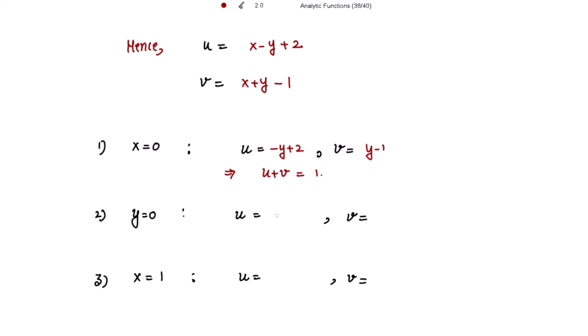For y = 0, we get u = x + 2 and v = x - 1. Solving these two gives u - v = 3. For x = 1, we get u = -y + 3 and v = y. Solving these two equations gives u + v = 3.